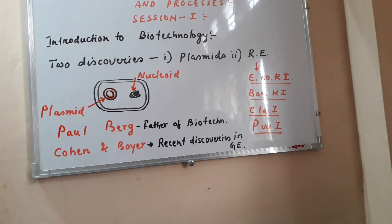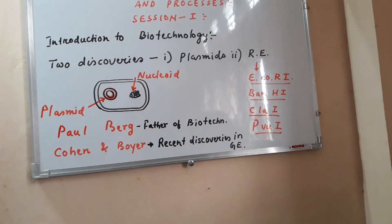Biotechnology was made possible because of two important discoveries during the mid of the 20th century. In 1970, we discovered plasmids and restriction endonucleases. These two discoveries made biotechnology possible.